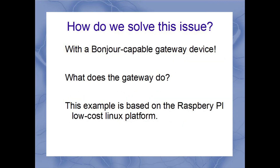So how do we solve that problem? With a Bonjour capable gateway device. What a gateway does for you is it listens on one network for that multicast message, and then it retransmits that multicast across all of the networks that are configured in your gateway. In our example here, we're using the low-cost Raspberry Pi platform, which can be had for about $75.